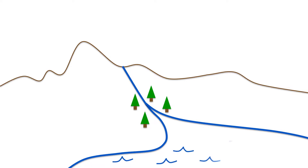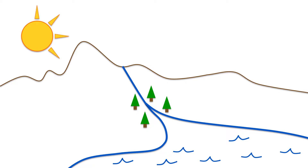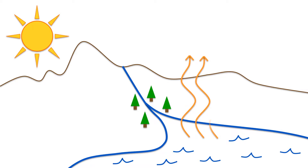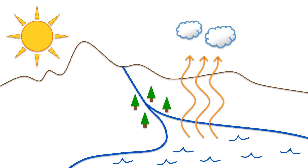Water is always on the move. The heat of the sun provides energy to make the water cycle work. The sun evaporates water from oceans into water vapor. That water vapor rises up and condenses into clouds when the air is cooler. Then rain or snow falls from the clouds to Earth as precipitation.